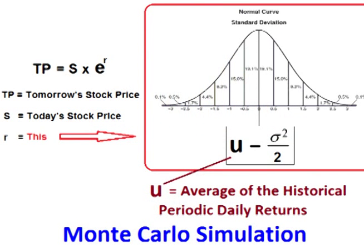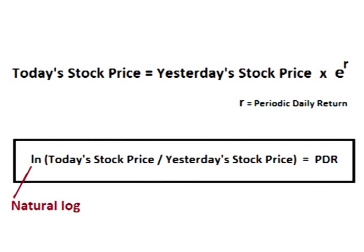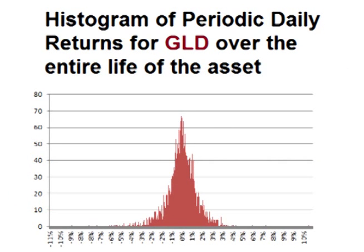We can use this type of modeling to determine probability of future returns of an asset. We can create a histogram of the periodic daily returns for that asset and use it to make inferences about future asset returns. In other words, we can use the histogram to determine the probability or odds of what will happen in the future.